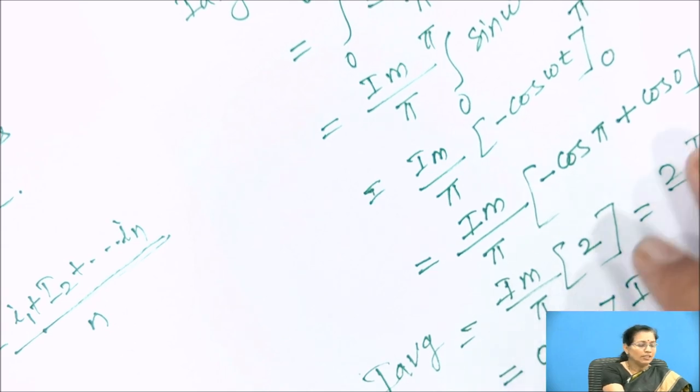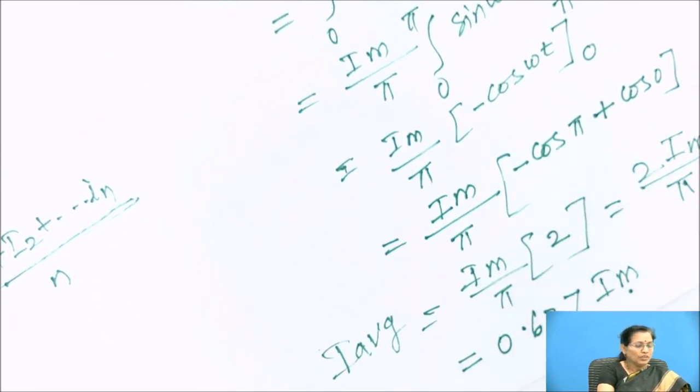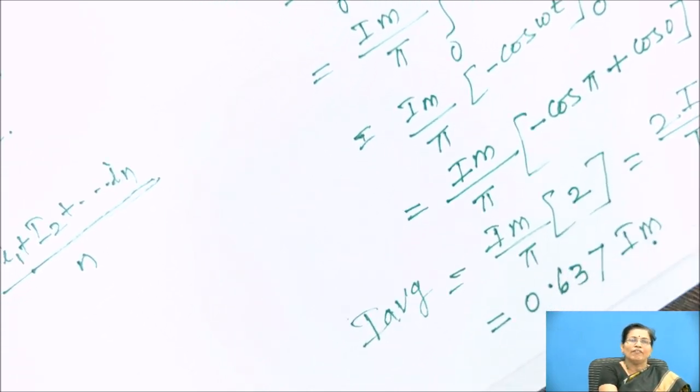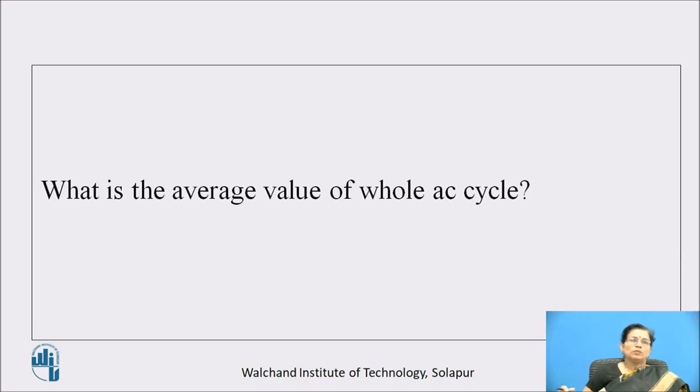So we can consider this relation to calculate the average value. So here now pause the video and think about what is the average value of whole cycle. Average value of AC cycle is zero.